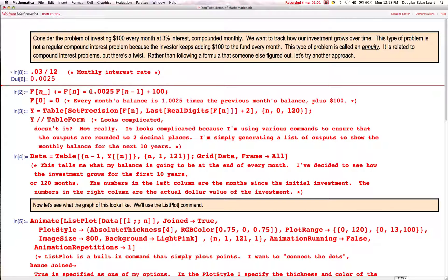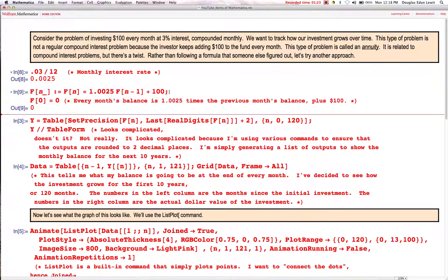Now, the formula for this is really not complicated. To figure out this month's balance, I have to take last month's balance, multiply that by 1.0025, and then add $100. So this right here is going to be my basic formula. And of course, we start out with 0. We start with nothing. So let me hand the problem over to Mathematica.